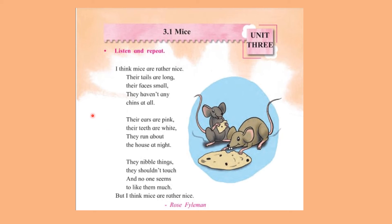Now children I will explain the poem to you. I have already told you so much about mice — that they have long tails, small faces, big ears, a very good sense of smell, and good hearing, though they can't see very well. The whiskers help them to feel around. 'They haven't any chins at all' — a mouse does not have a chin like we do below our mouth. That part is called a chin. They just have their mouth there and their face then connects to their neck.